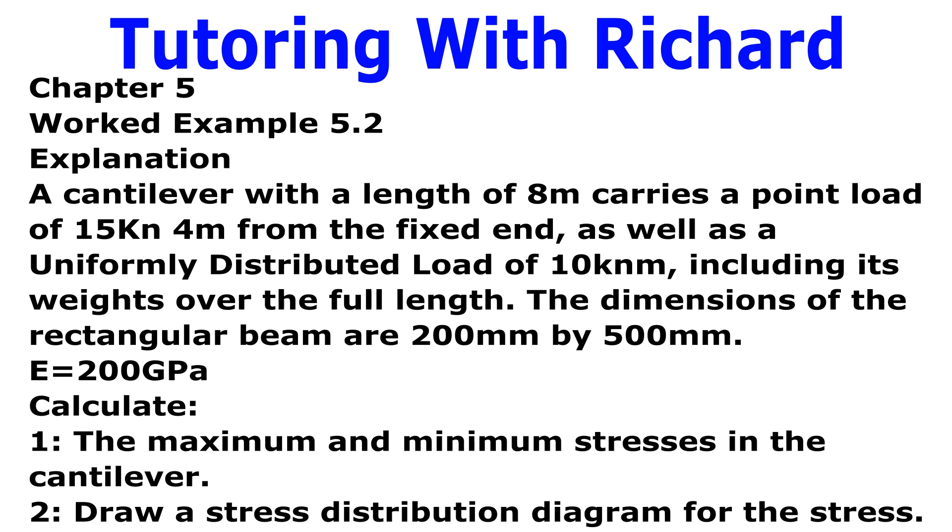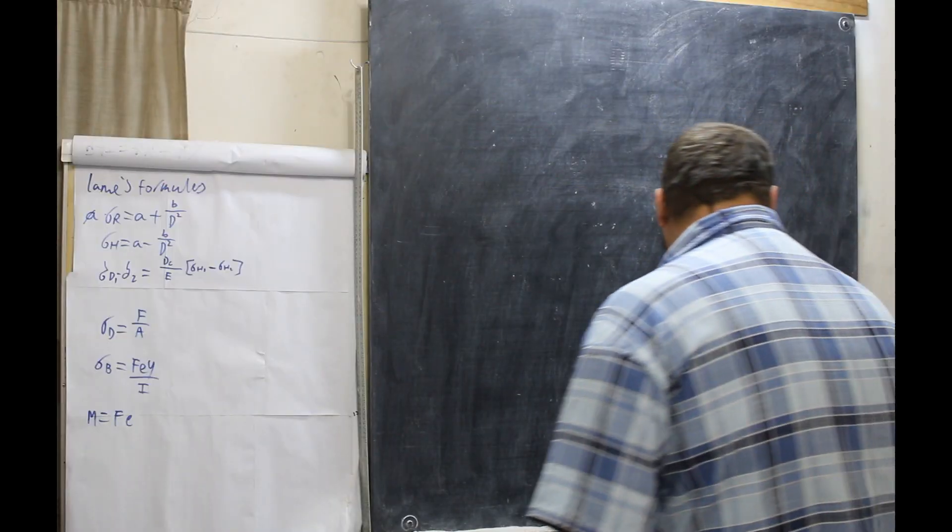E is equal to 200 gigapascals. The first part of the question: Calculate the maximum and minimum stresses in the cantilever. And two is to draw a stress distribution diagram for the stress. Okay, first things first. Let's draw our cantilever.